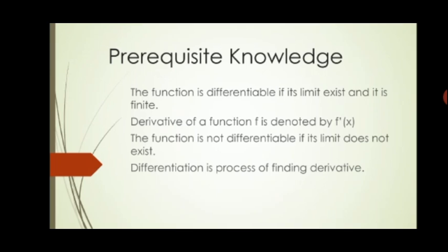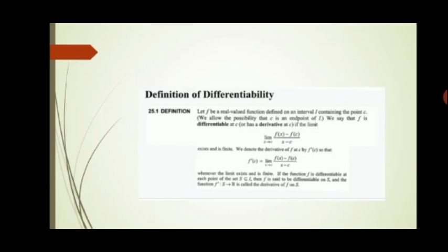We have already studied how to find derivatives with the help of first principle. Let us recall the definition of differentiability. Consider f to be a real-valued function defined on an interval I containing the point c. We say that f is differentiable at c if the limit as x tends to c of [f(x) − f(c)] / (x − c) exists and is finite. If this limit does not exist, then the derivative of that function will not exist either.